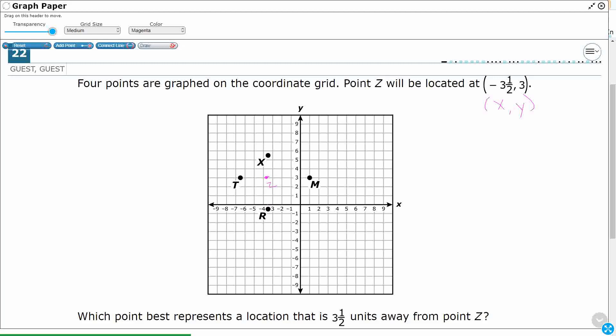And if I wanted to plot that, it's going to be negative 3.5 and then a y value of 3. So what I'm looking for is a point that is 3.5 units away from point Z. But they don't tell you which direction.